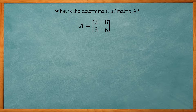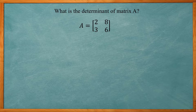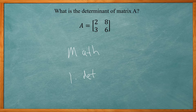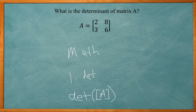This one says, what is the determinant of matrix A? Using the TI-83/84, go to second matrix, Edit, input the 2×2 matrix: 2, 8, 3, 6. Go back to second mode, then second matrix, over to Math — choice one is DET for determinant. Choose that, then go back to second matrix and choose matrix A, close parentheses, press enter. You get negative 12. So the determinant of this matrix is negative 12.